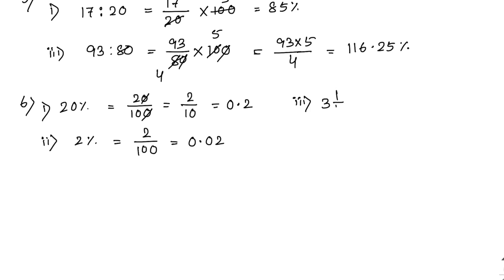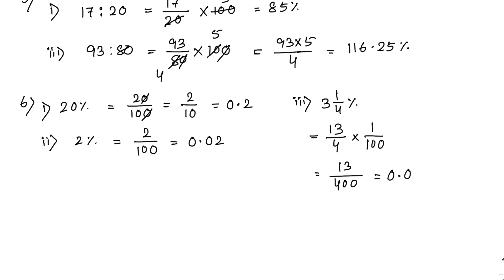The third one: 3 whole 1 by 4 percent. Convert to improper fraction: 13 by 4. Then divide by 100, giving 13 by 400. Convert to decimal: the answer is 0.0325.